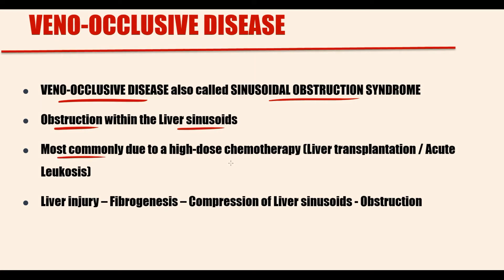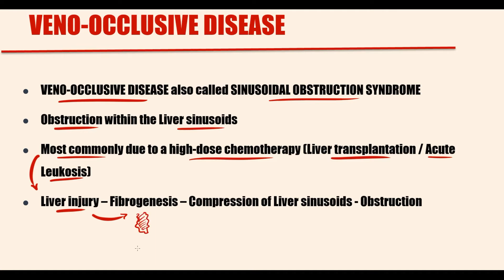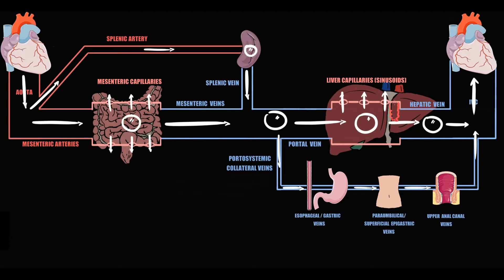The most common reason why venoclusive disease develops is the side effect of high-dose chemotherapy. Before liver transplantation or during treatment of acute leukosis, for example, we give the patient high-dose chemotherapy to decrease the amount of immune or malignant cells. Chemotherapeutic drugs have a potent hepatotoxic effect. When chemotherapy causes liver injury, the liver reacts by fibrosis to repair the damage. The problem is that severe fibrosis will compress intrahepatic vessels such as liver sinusoids, and that is the moment when venoclusive disease begins to progress.